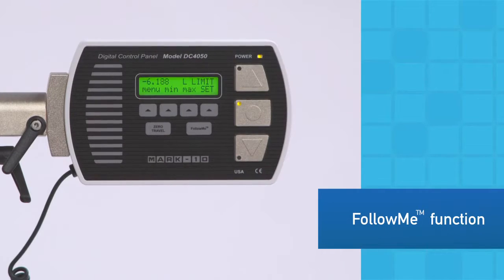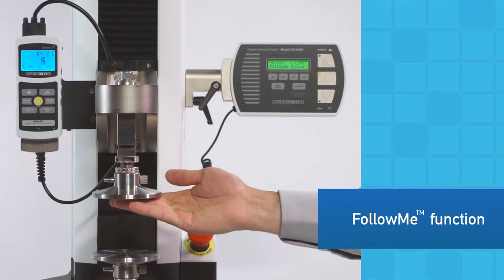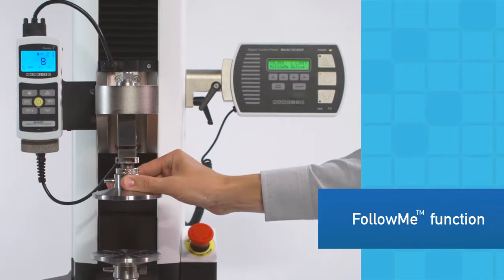Easily position the crosshead for sample setup with the unique follow-me function. Simply push and pull on the load cell or force gauge to move the crosshead. The greater the force, the faster the speed.